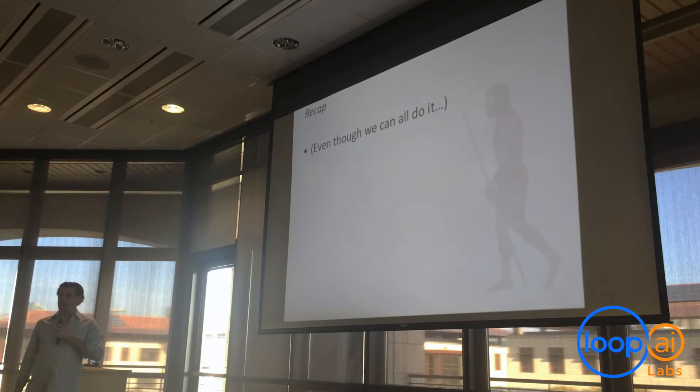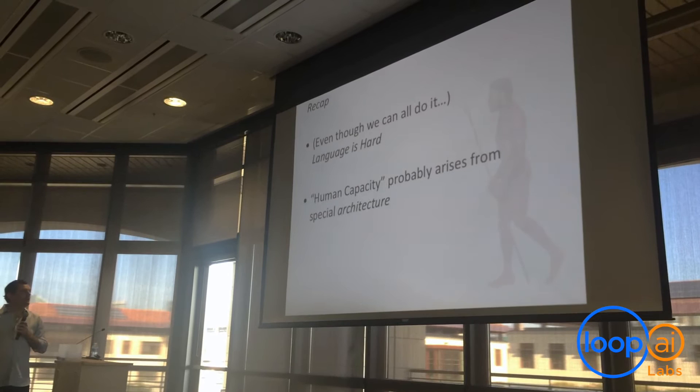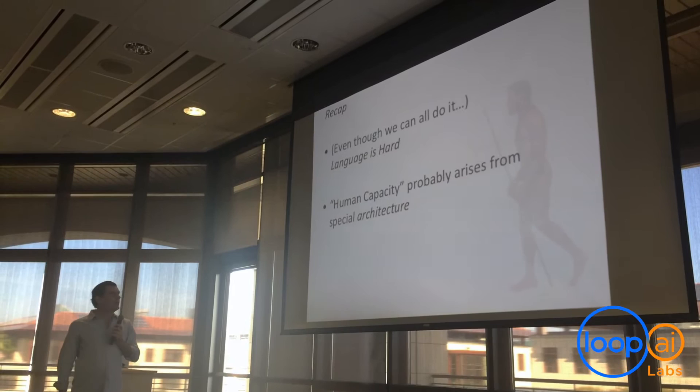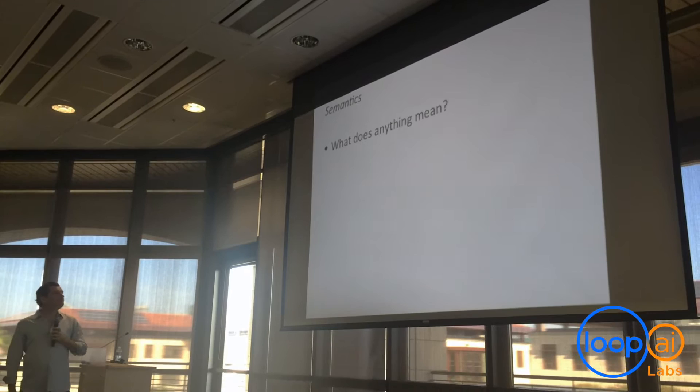So just to recap: even though we can all do it, language is actually very hard to do. Second, human capacity for language probably arises from some kind of special architecture — the way the brain is wired. So if we want to do language understanding, the thing to do is to experiment with different architectures. Let's talk for a little bit about semantics.